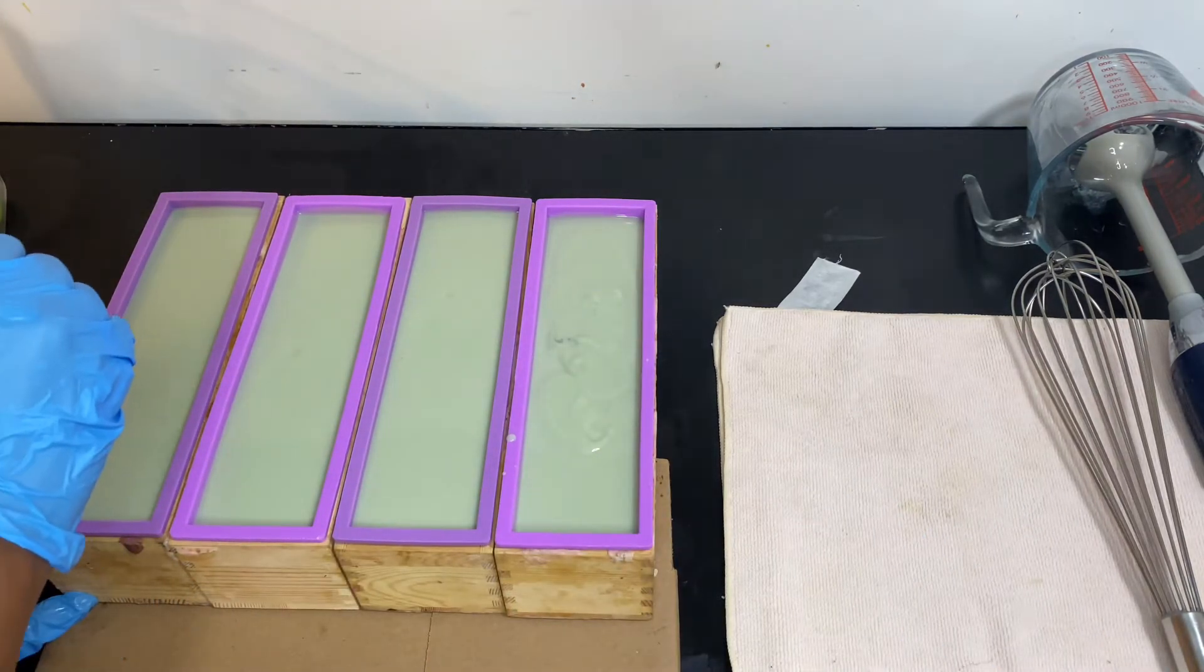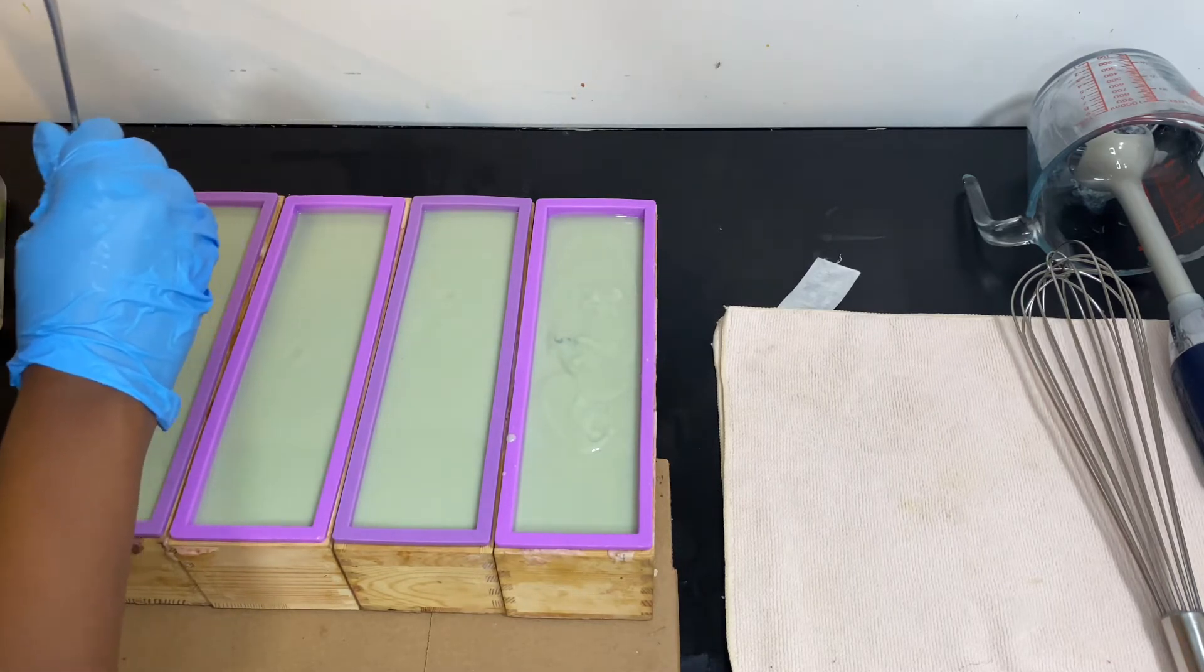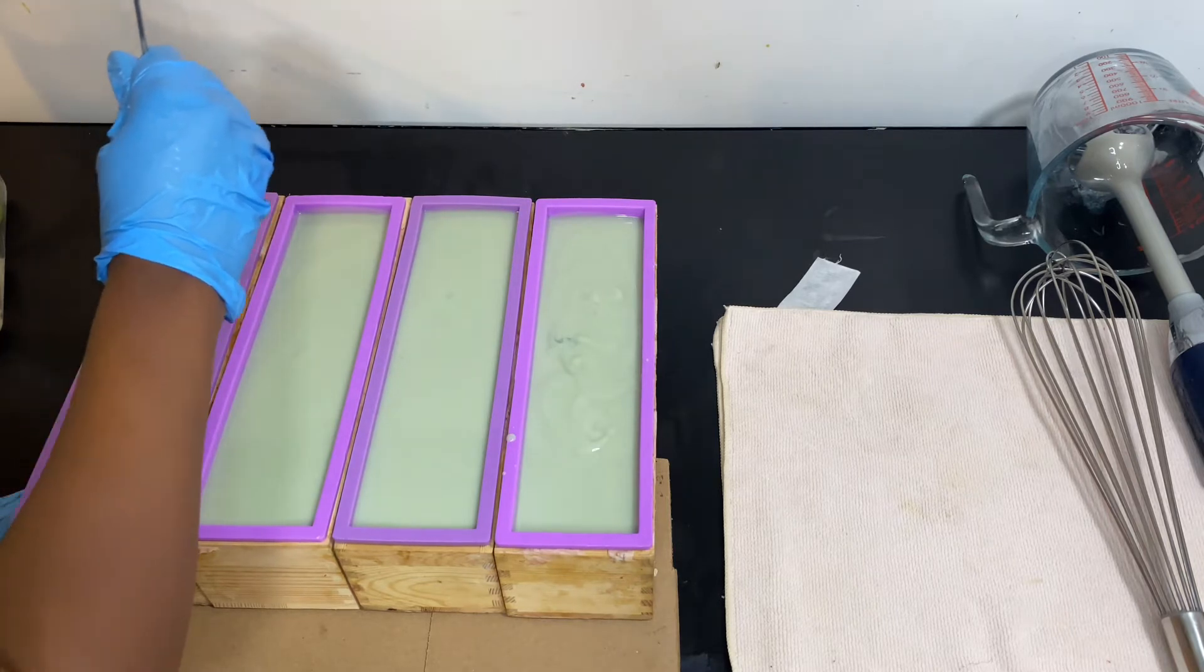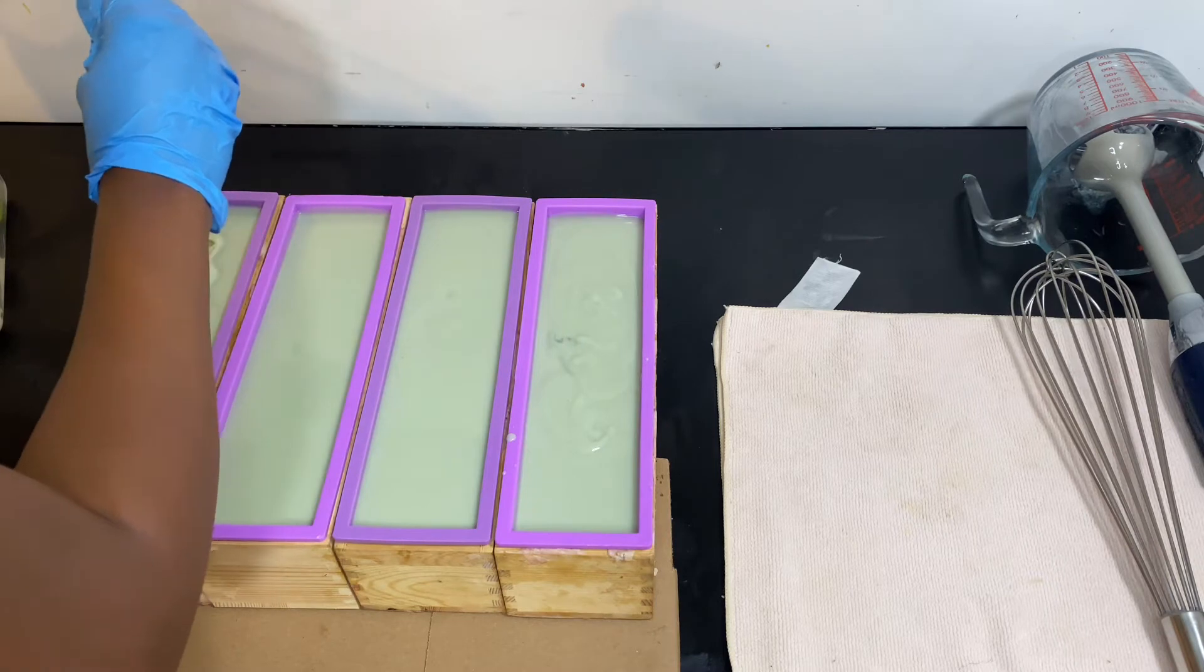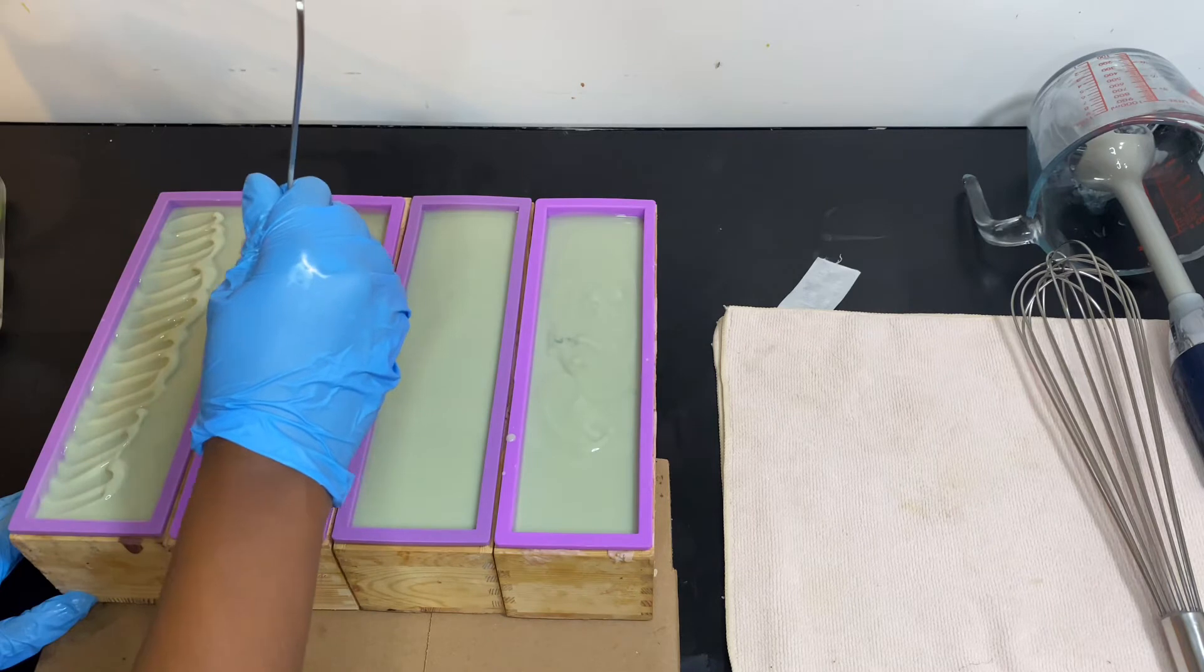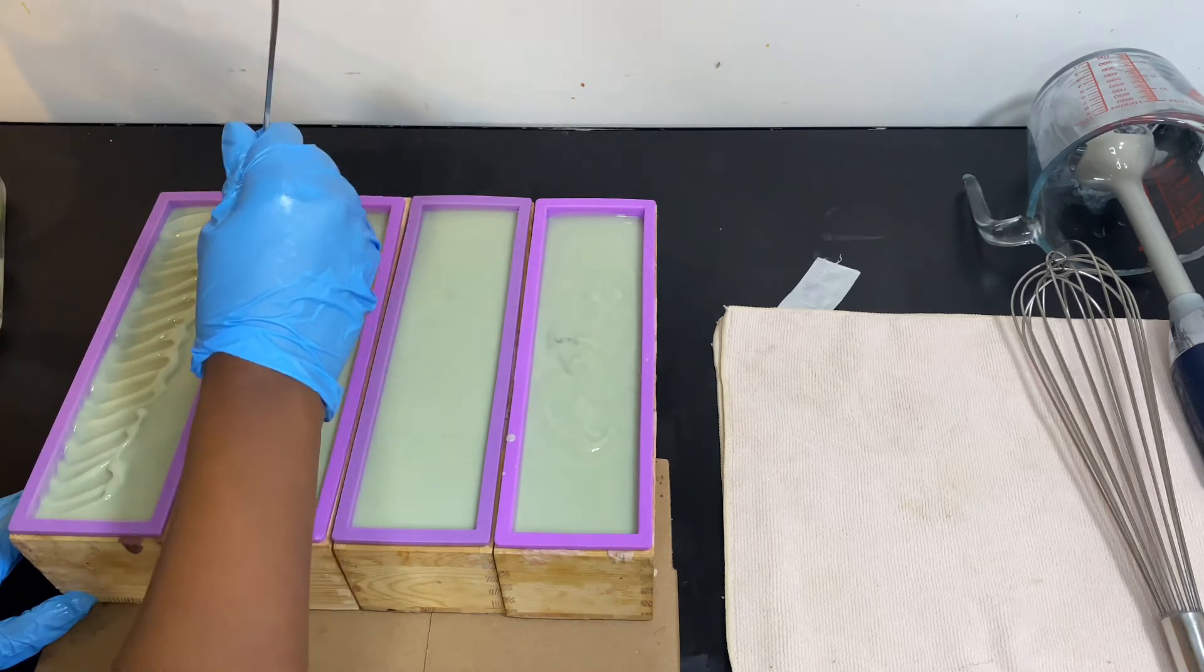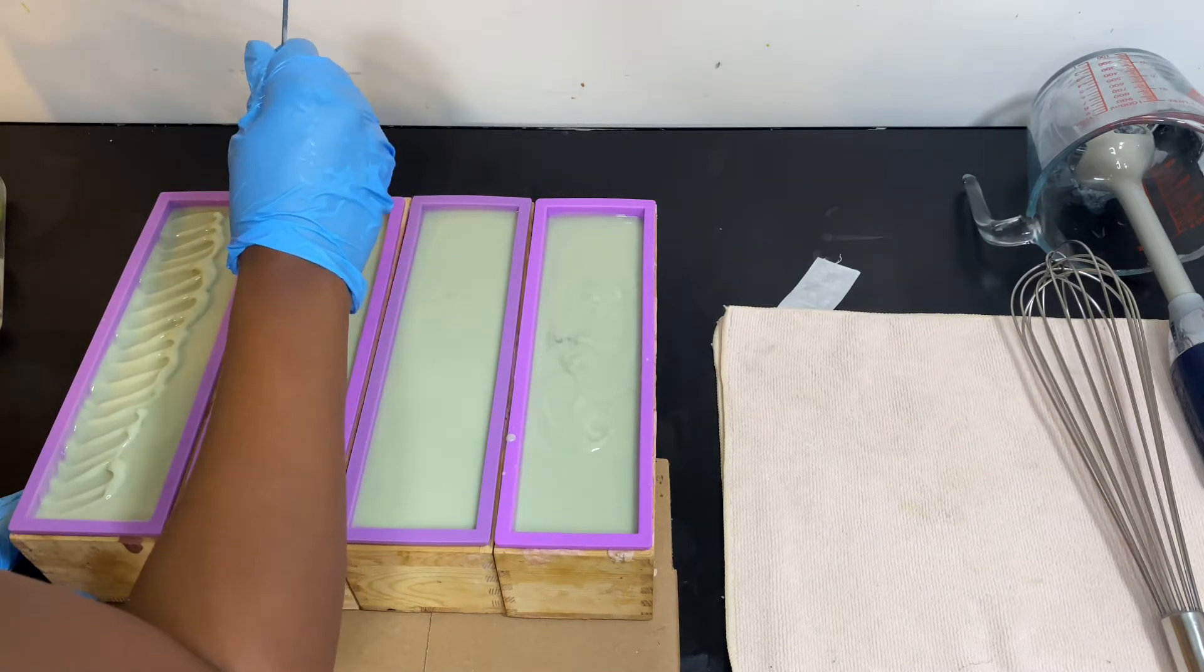All right guys, so all of our batter is now poured into our soap molds and I'm going to go in with my long spoon and texture the tops. I'm going in at an angle to texture the tops. It turned out really pretty. I really like the way the soap turned out. We're going to let our soap sit overnight for 18 to 24 hours and then we're going to come back and cut them the next day.